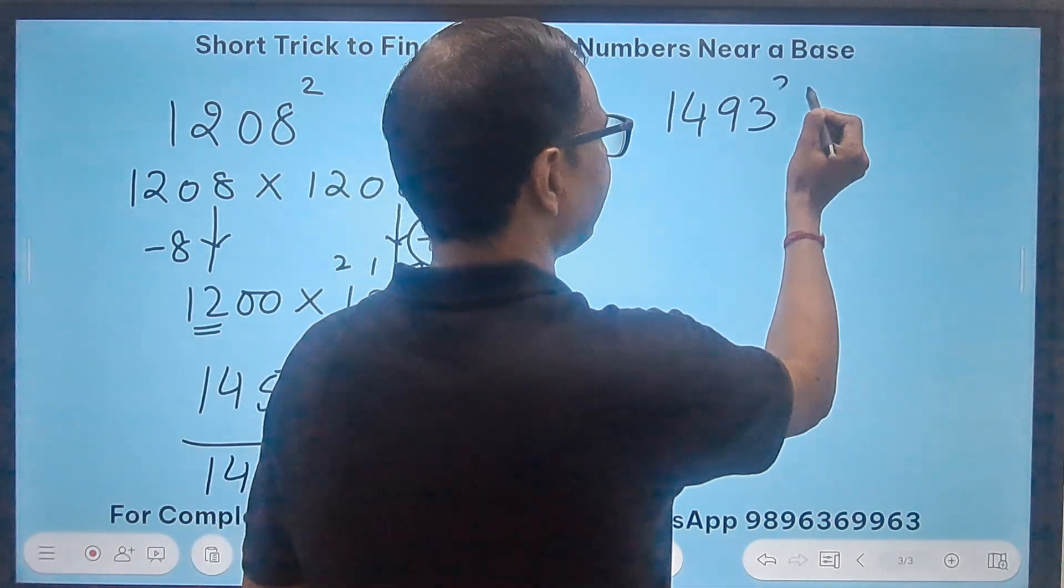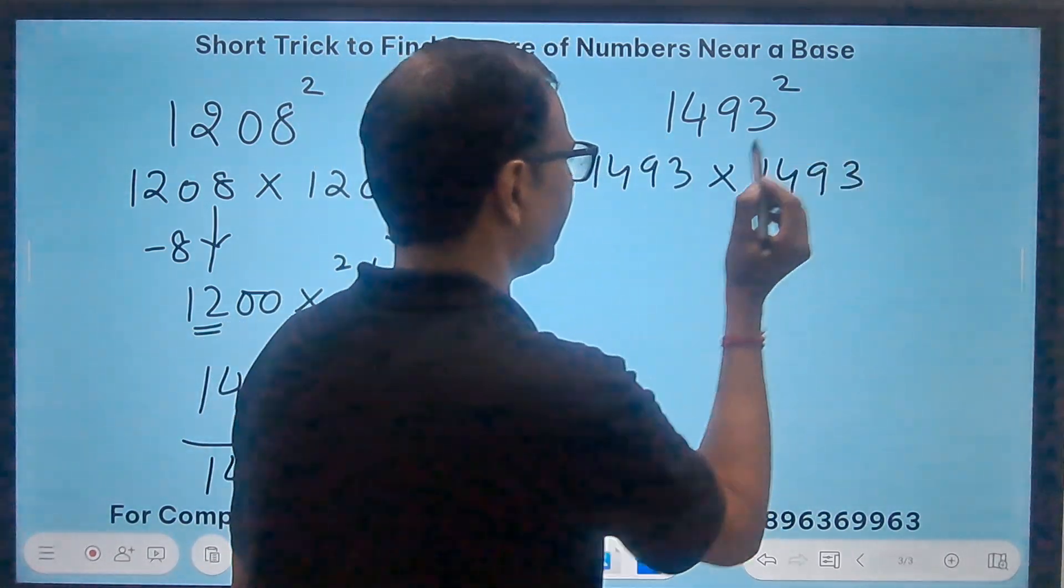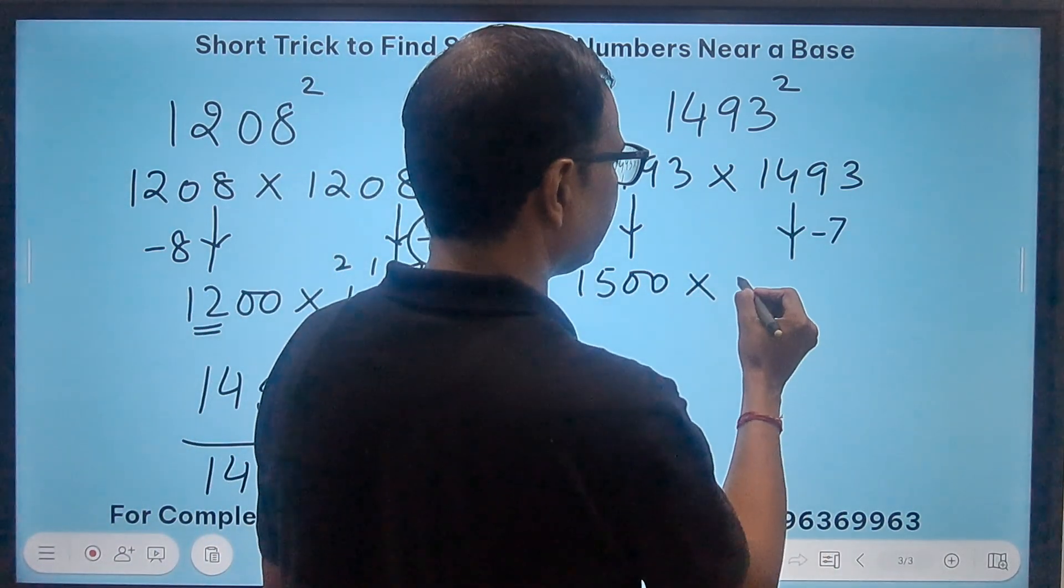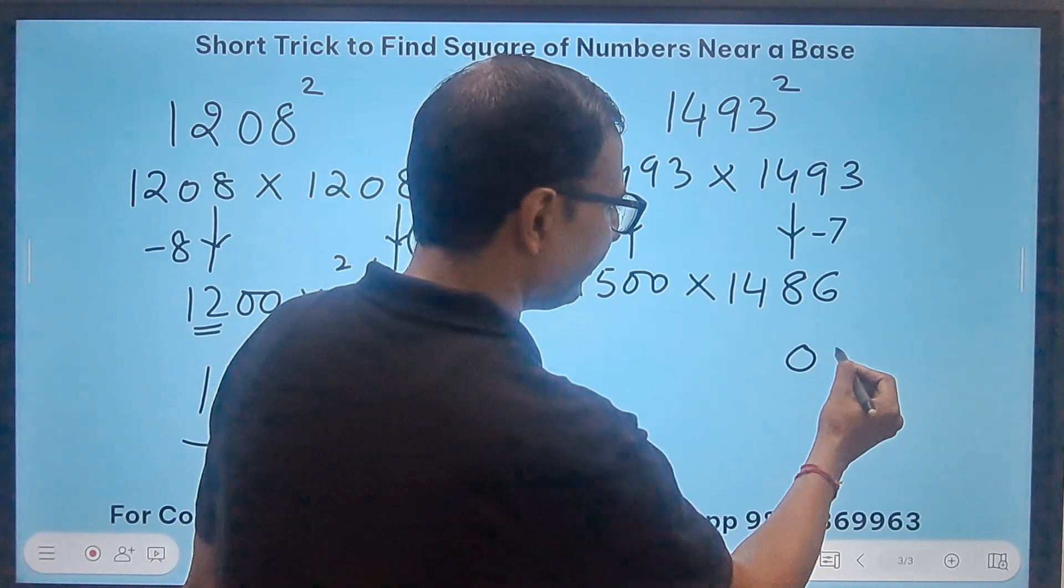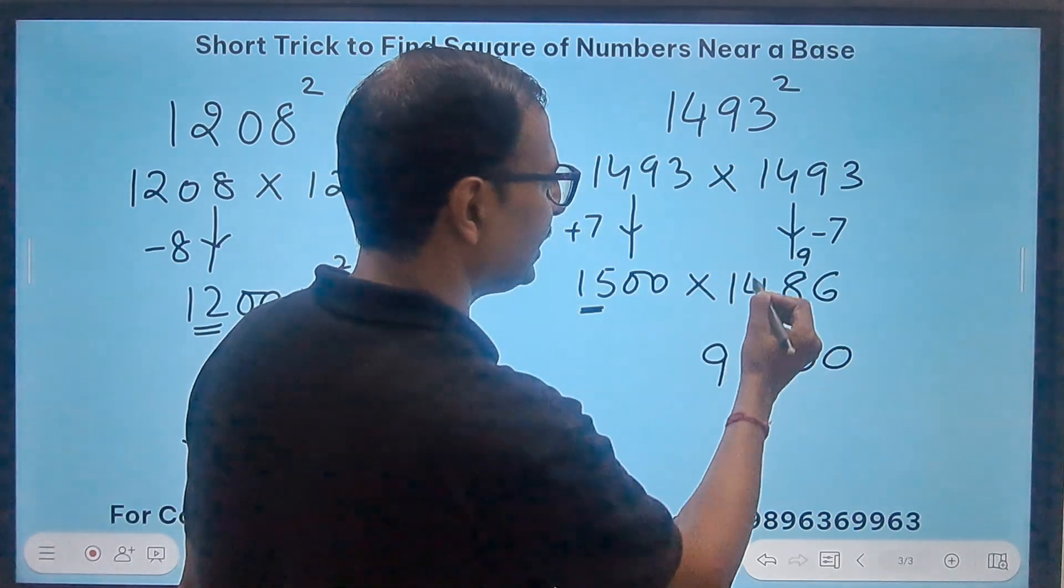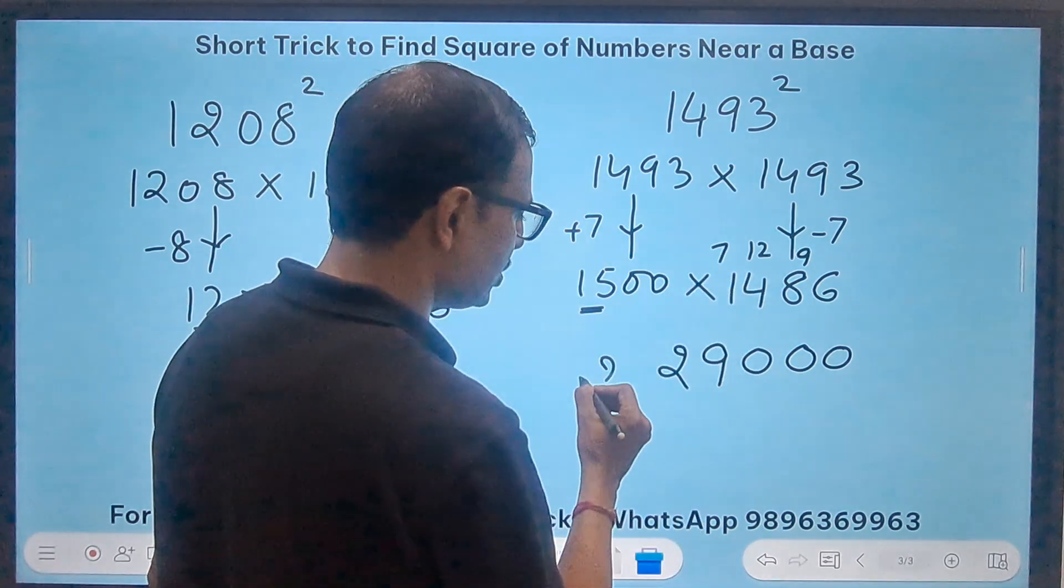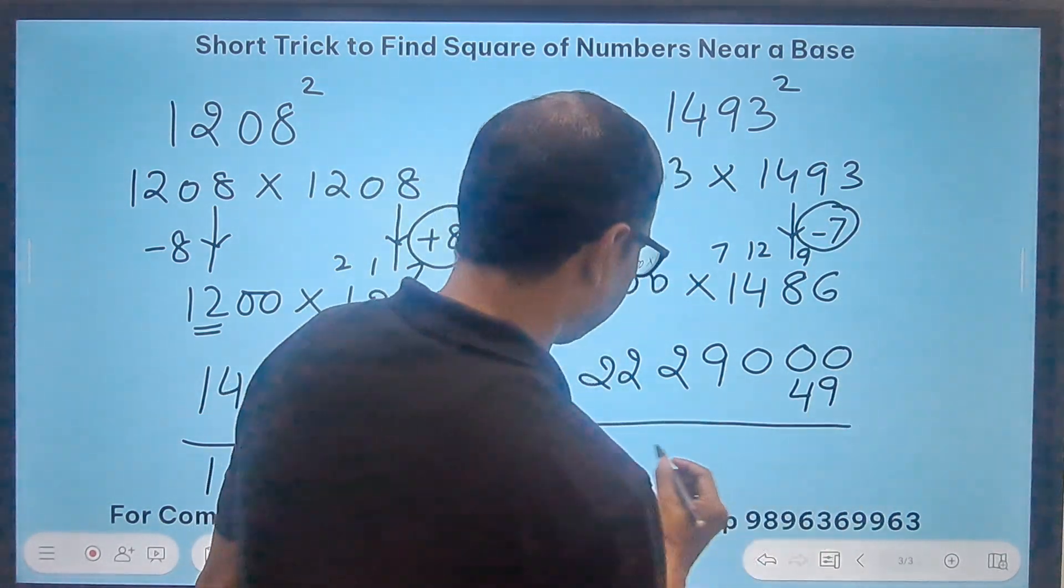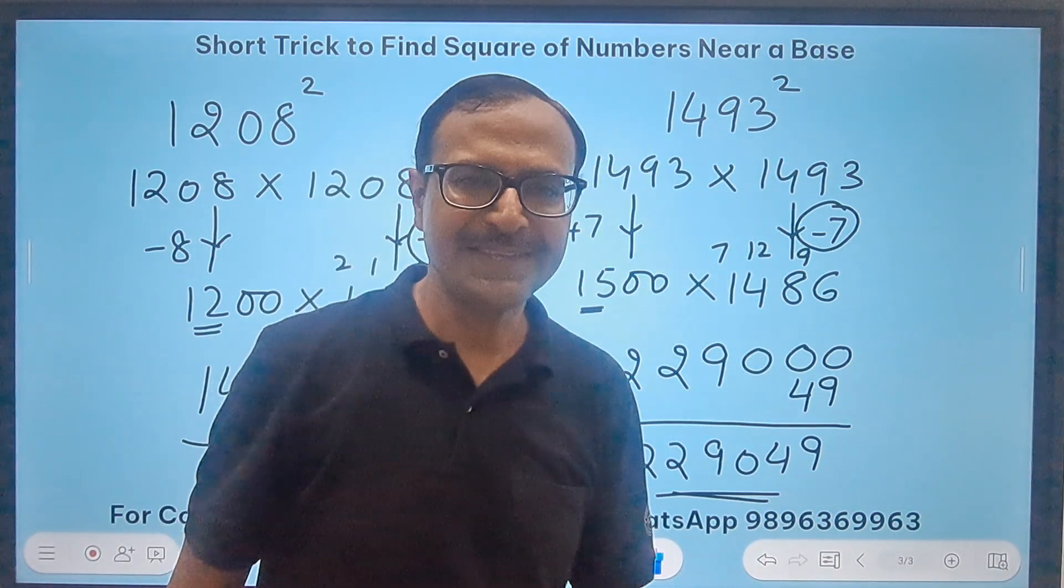Big number: 1493 square, very close to 1500. So 1493 times 1493. Increase this by 7, I get 1500. And reduce this by 7, I get 1486. Now 2 zeros. Perfect. 15, 6's are 90, 0, 9. 15, 8's are 120, 129 means 9 and a 12. 15, 4's are 60, 72 means 2 and a 7. 15, 1's are 15 plus 7, 22. So 2, 2, 2, 9, triple 0. And 7 square is 49. That will give me my final answer: 2,229,049. That is the square of 1493.